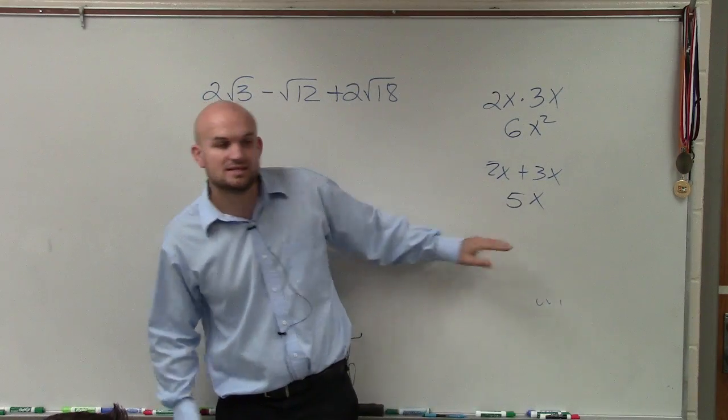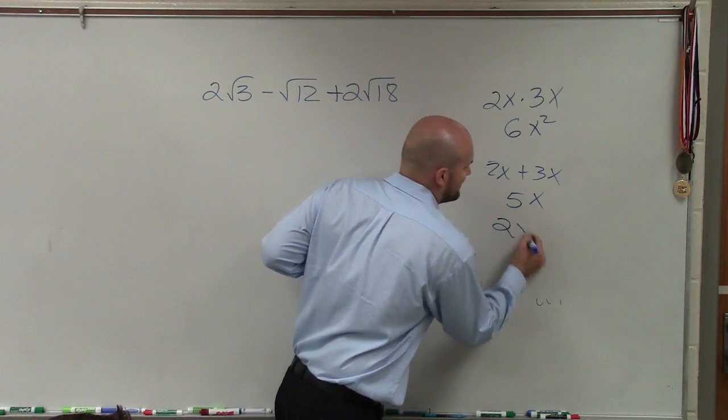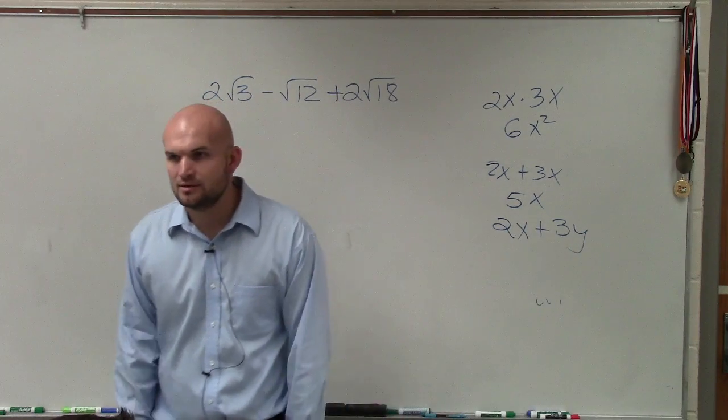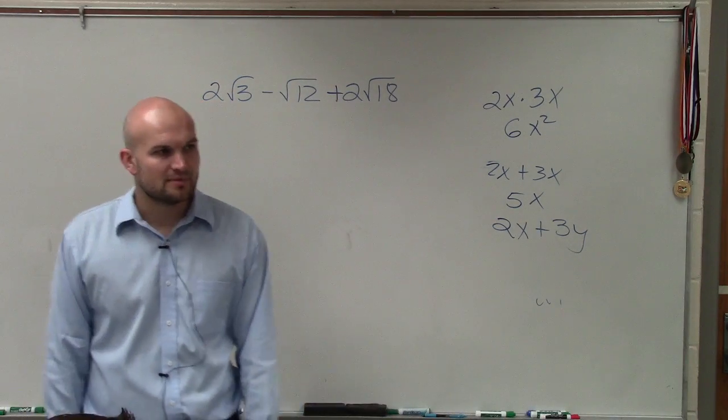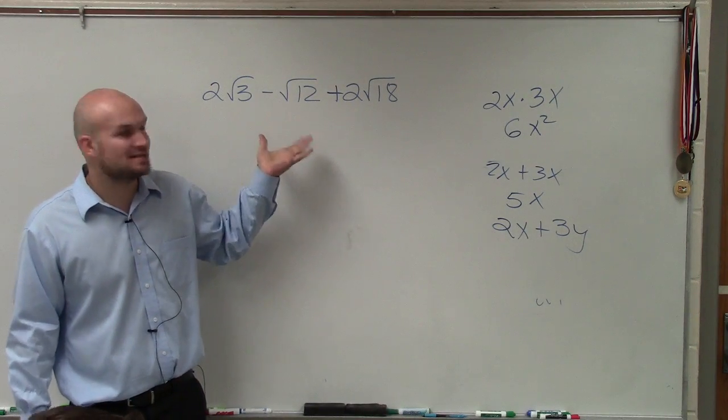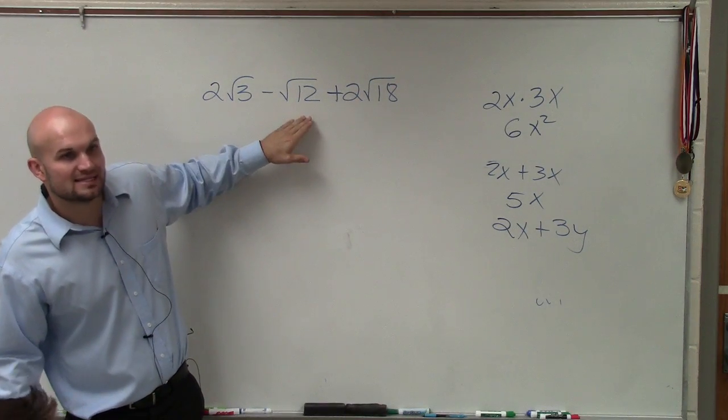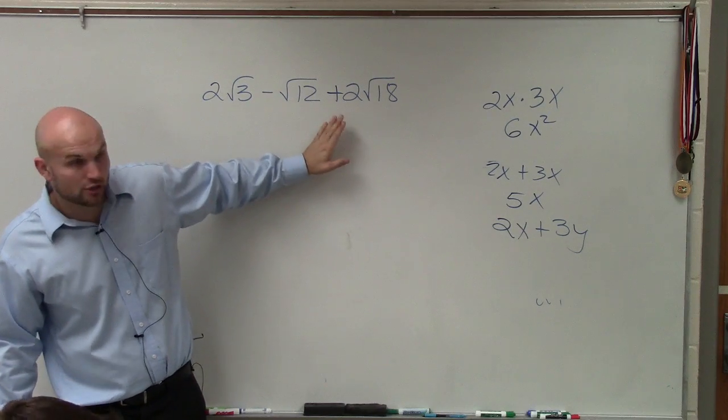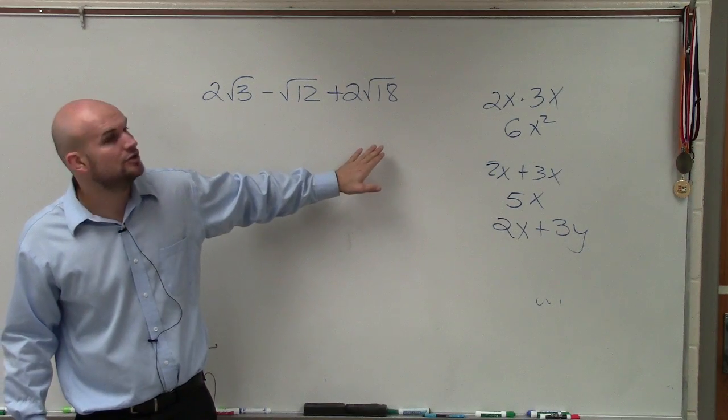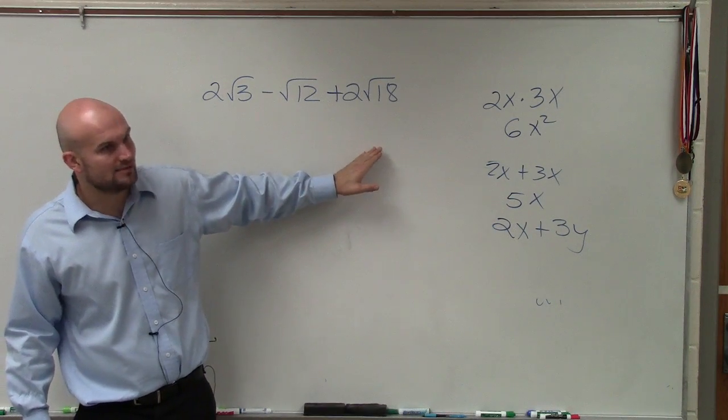So the next thing was, what about if I said 2x plus 3y? Can we add 2x plus 3y? No, because they're not like terms, right? The exact same thing is the case when adding and subtracting radicands. If your radicand is not the same, that means the number under your radical, you cannot combine them. You can do it for multiplying and dividing. You cannot do it for adding and subtracting.